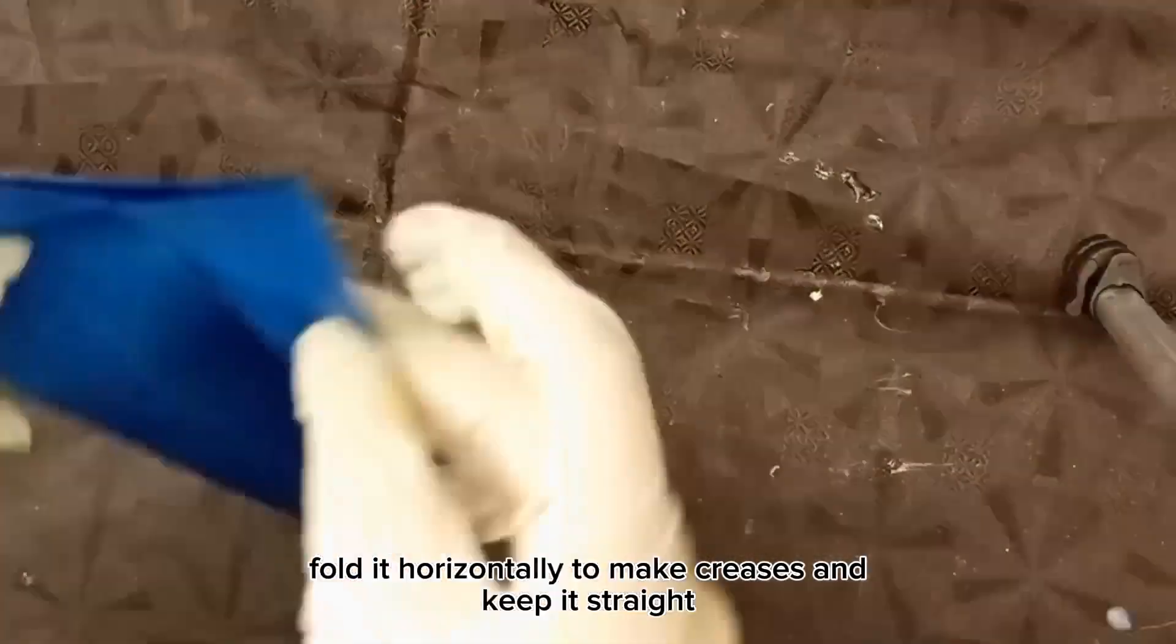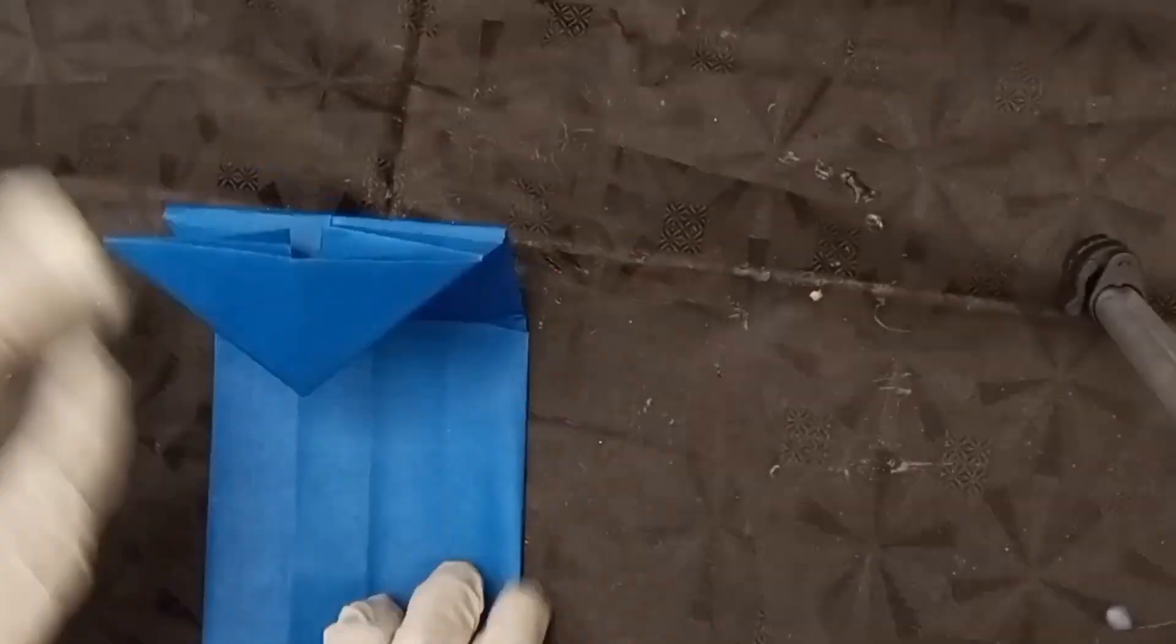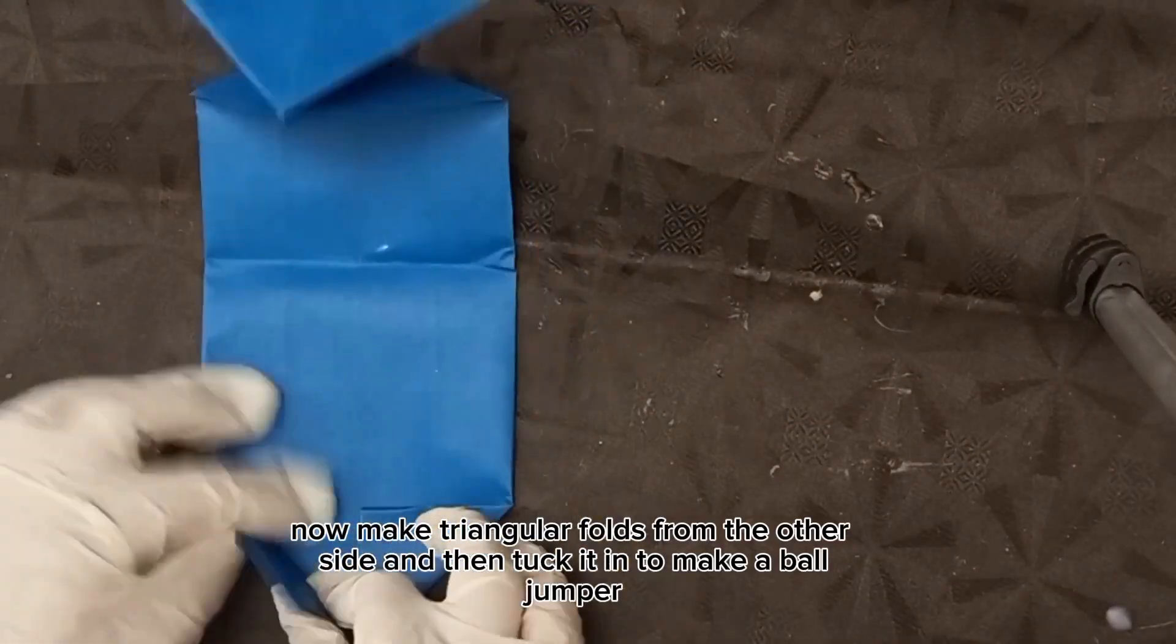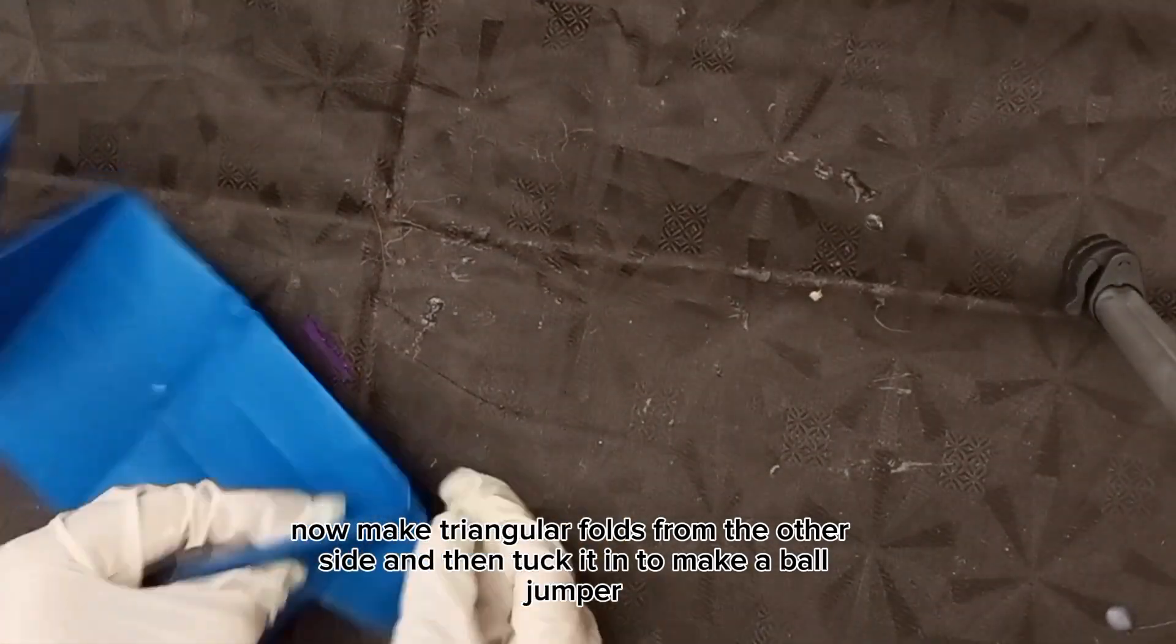Fold it horizontally to make creases and keep it straight. Now make triangular folds from the other side and then tuck it in to make a ball jumper.